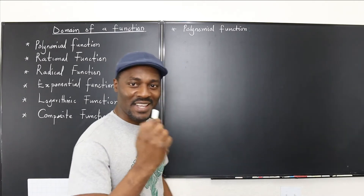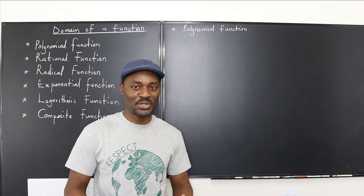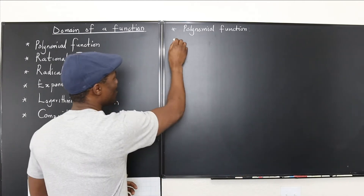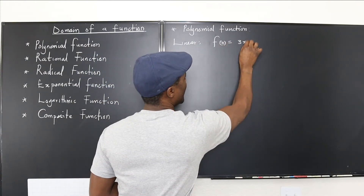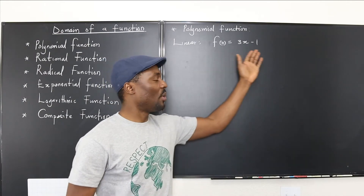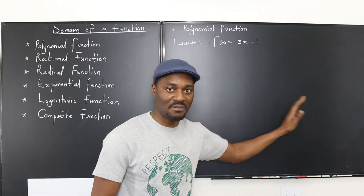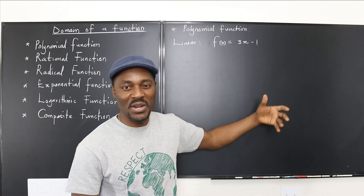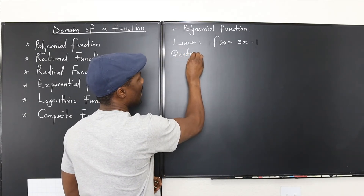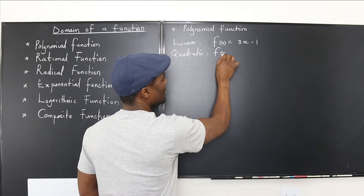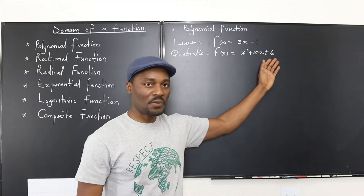Let's start with the first function: polynomial functions. The most common polynomial function is a linear expression — a good example would be f(x) = 3x − 1. A polynomial function always has x raised to some power plus additional terms, and may or may not have a constant. Another example is a quadratic: f(x) = x² + 5x + 6.